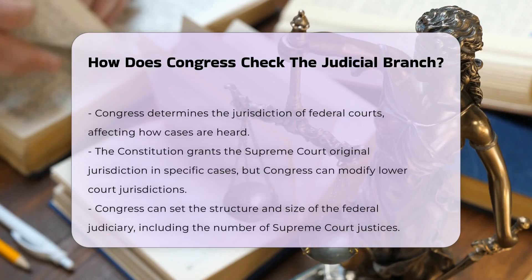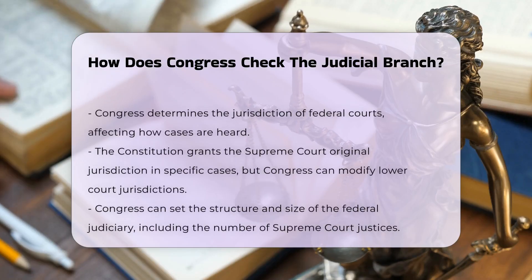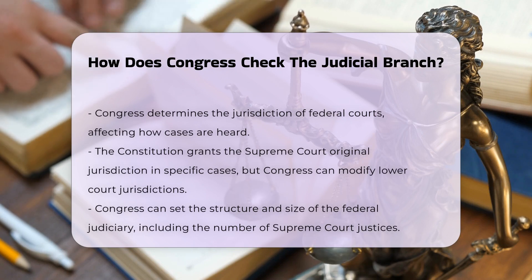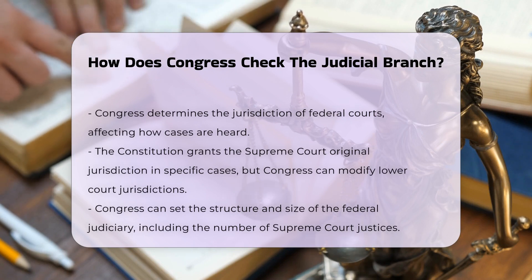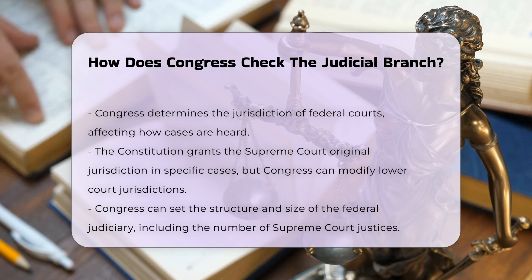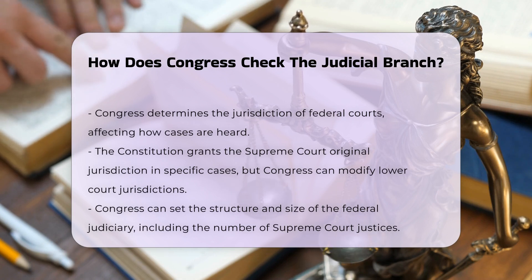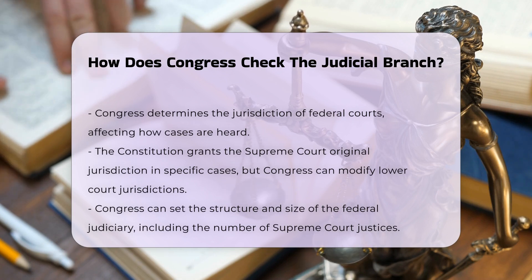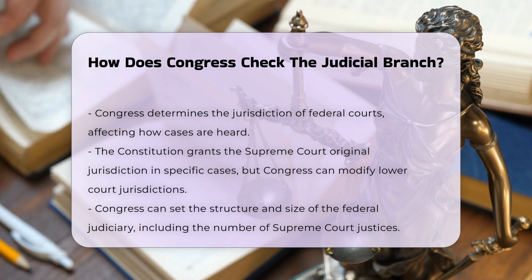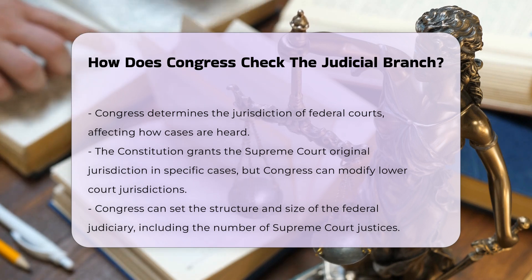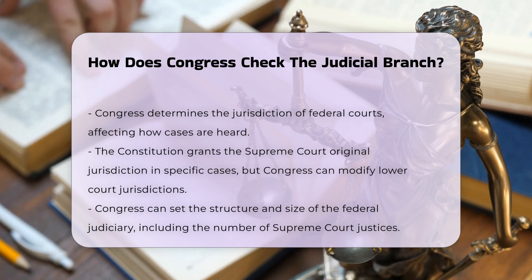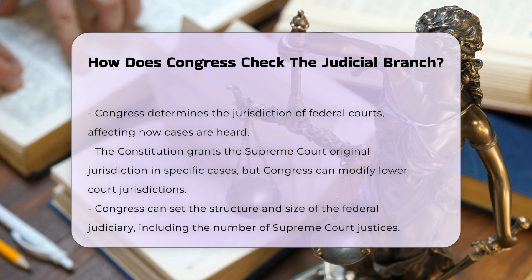Congress also has the authority to determine the jurisdiction of federal courts. While the Constitution grants the Supreme Court original jurisdiction in certain cases, Congress can establish and modify the jurisdiction of lower federal courts. This includes deciding the structure and size of the federal judiciary, such as the number of Supreme Court justices, which has varied over time.